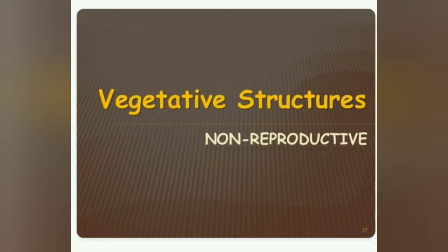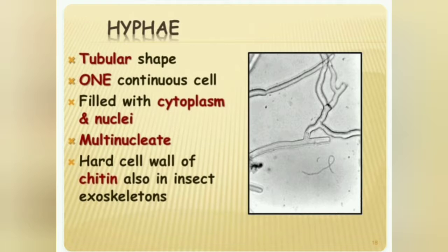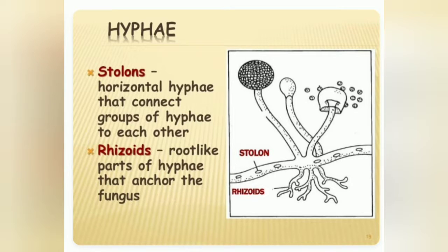In fungi there is a structure called hyphae. Hyphae are microscopic tubes or filaments. Hyphae have a tubular shape — one continuous cell filled with cytoplasm and nuclei, and are multi-nucleated. The hard cell wall contains chitin, also found in insect exoskeletons.